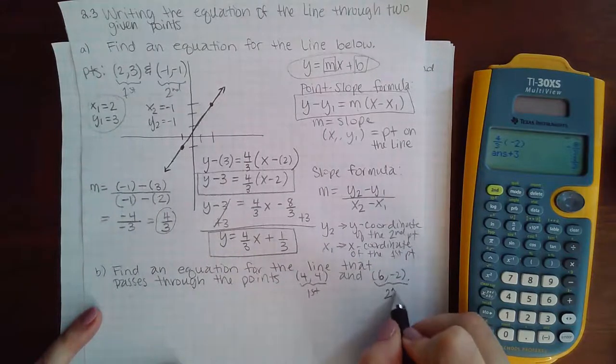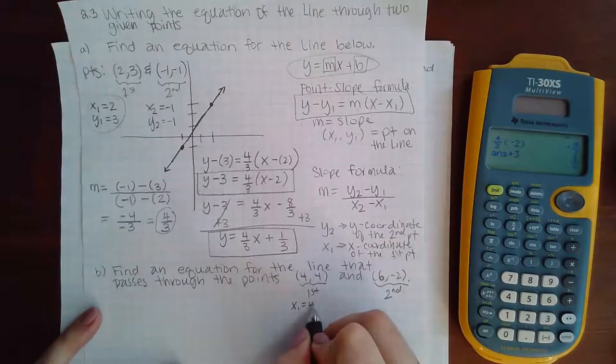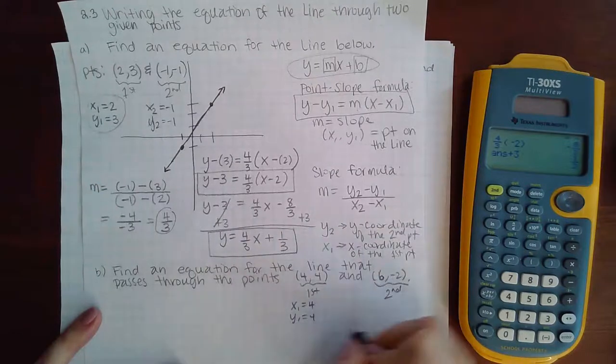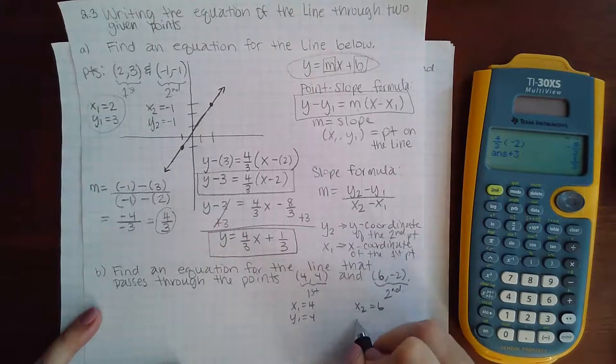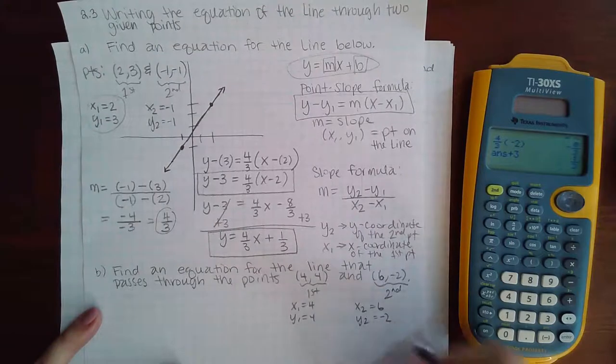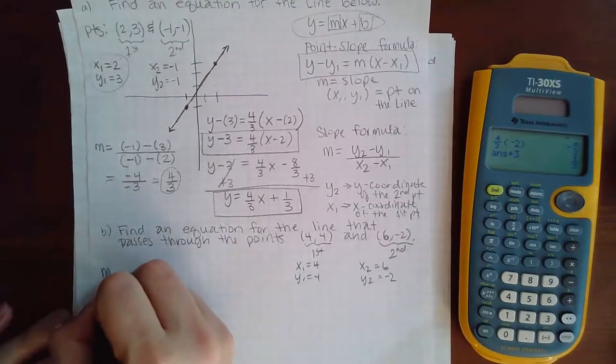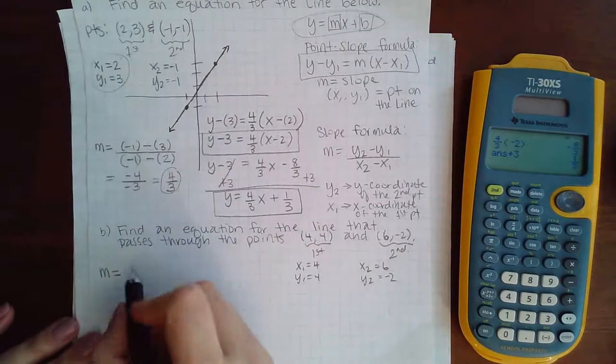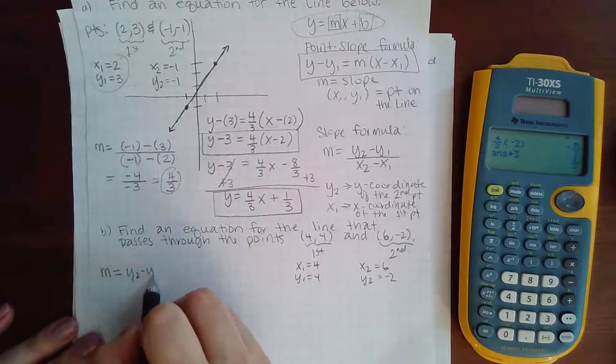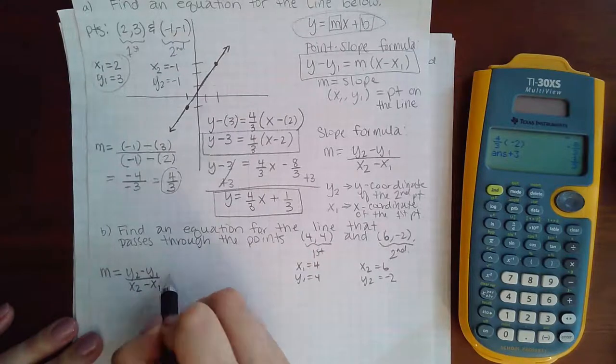And so then I can label this one as my first point, this one as my second point. And so then x1 is 4, y1 is 4, x2 is 6, and y2 is negative 2. And then I start using my formulas. So the first thing I need is the slope, which is y2 minus y1 over x2 minus x1.